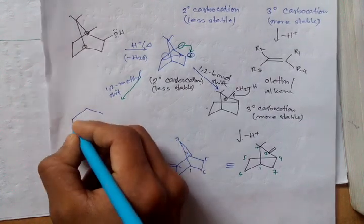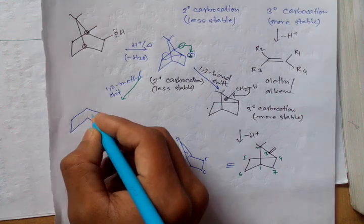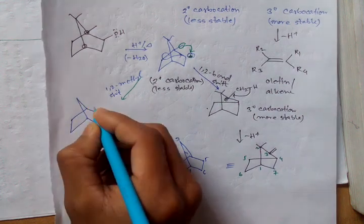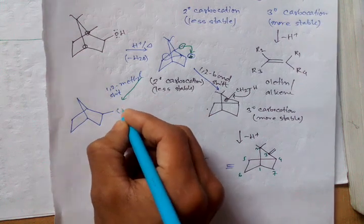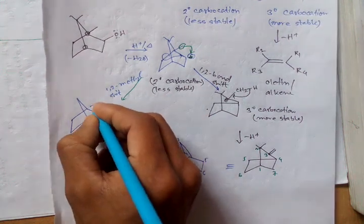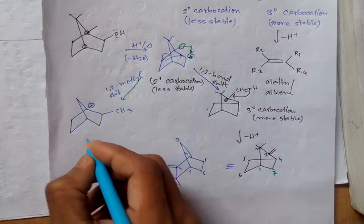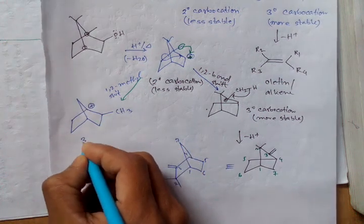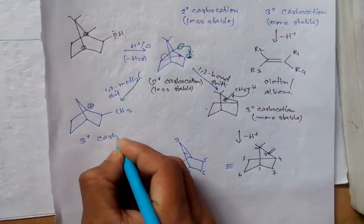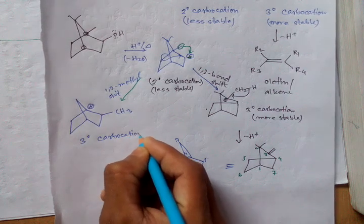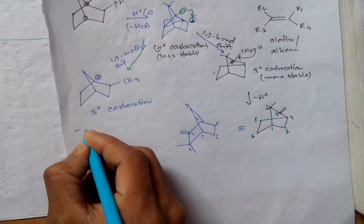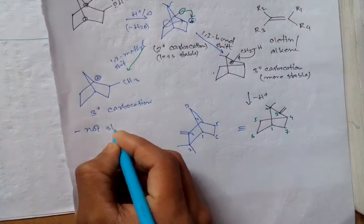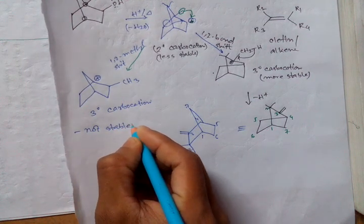Then we get a product like that. Here it is methyl group. And here generated positive charge. This is 3 degree carbocation. But it is not stable.